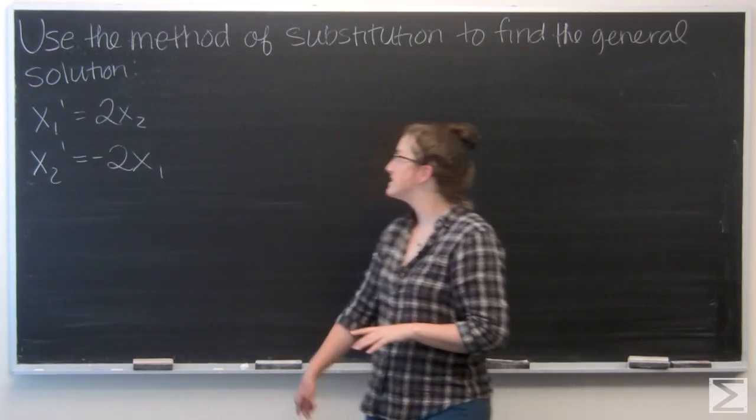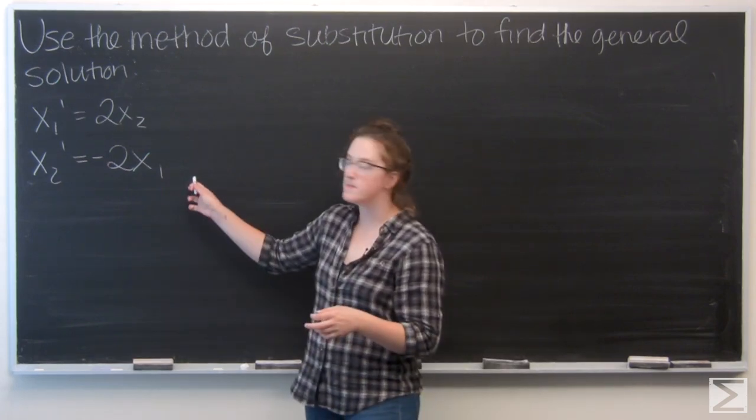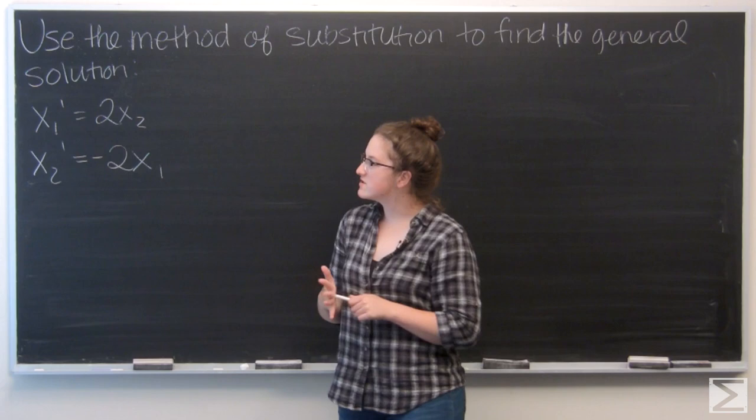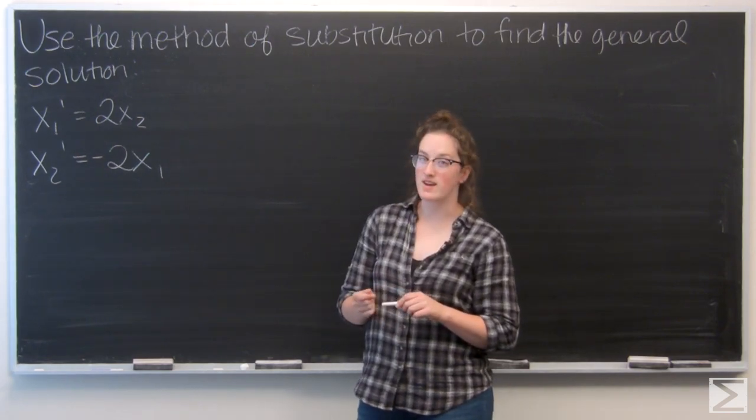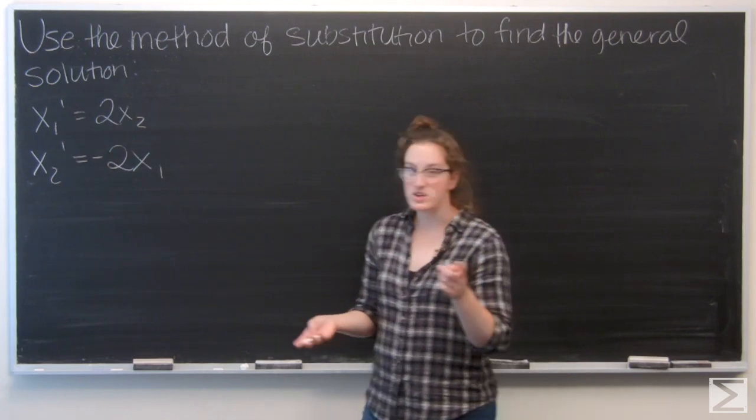For this question, we are asked to use the method of substitution to find the general solution for this system. I have x1 prime equals 2x2 and x2 prime equals negative 2x1. So I want to substitute from one equation into the other.